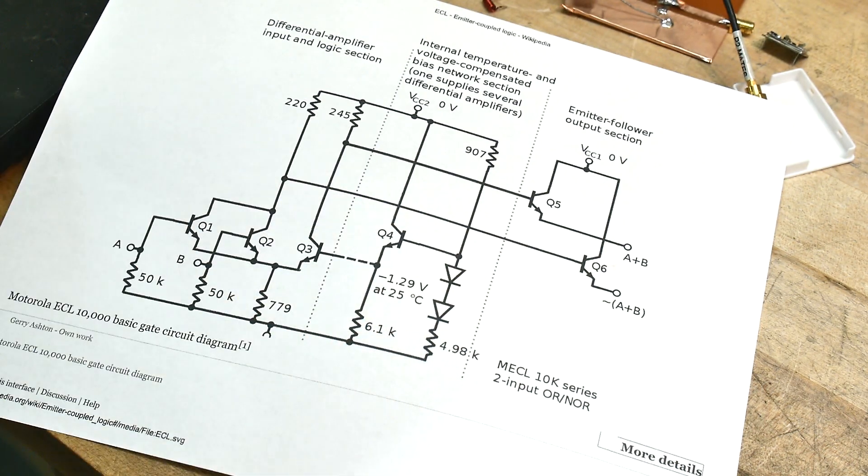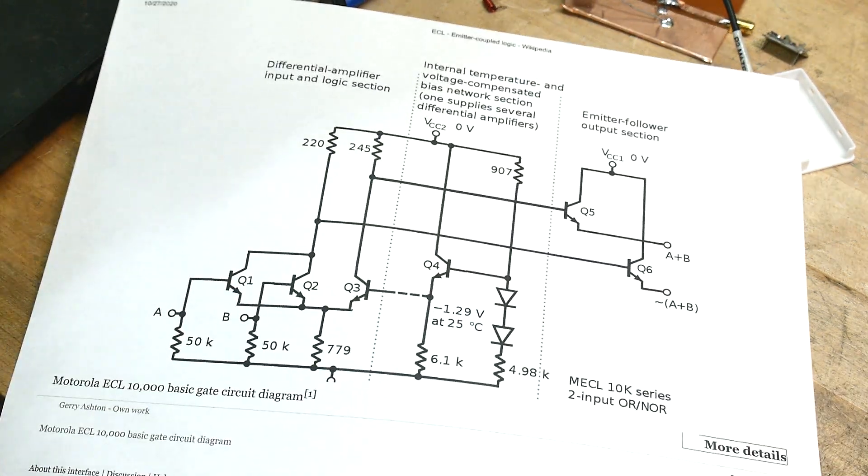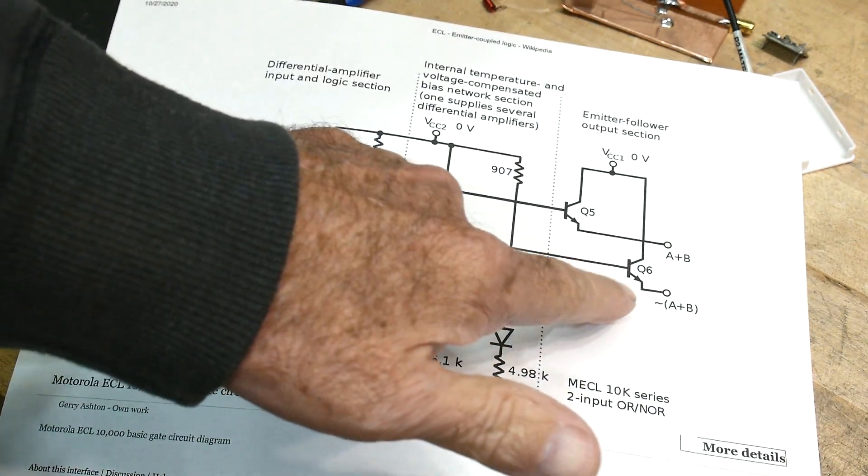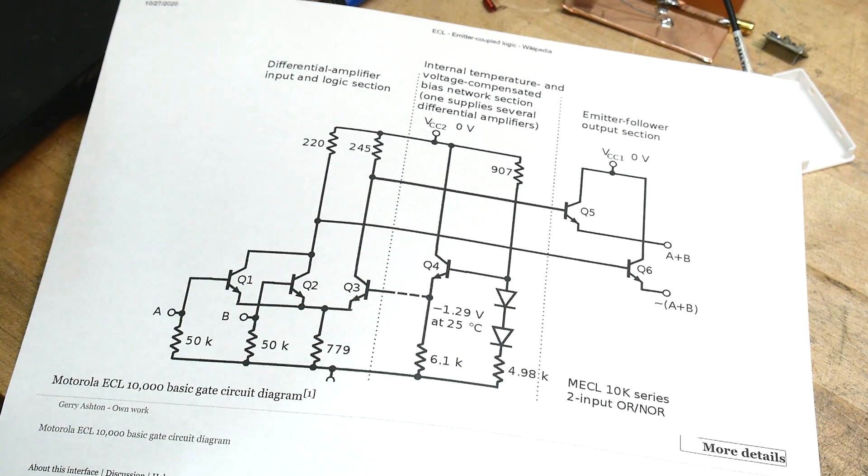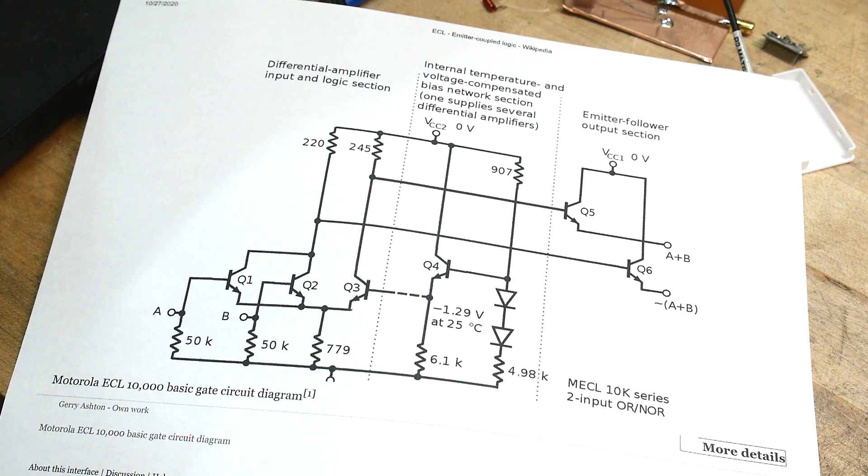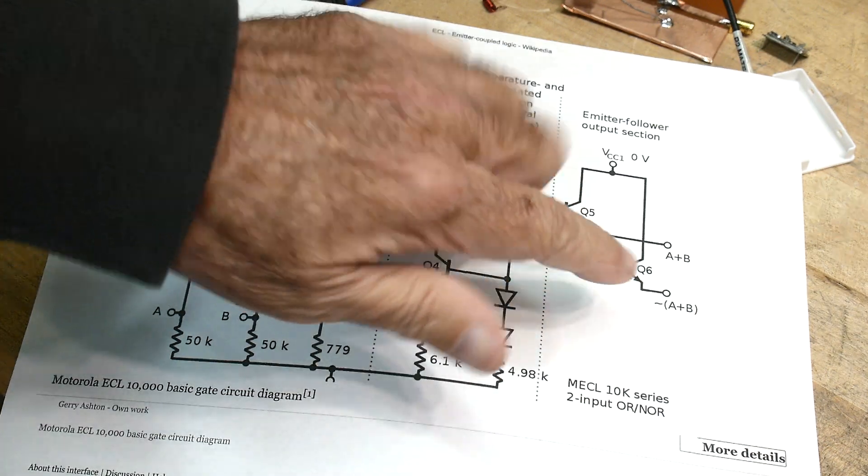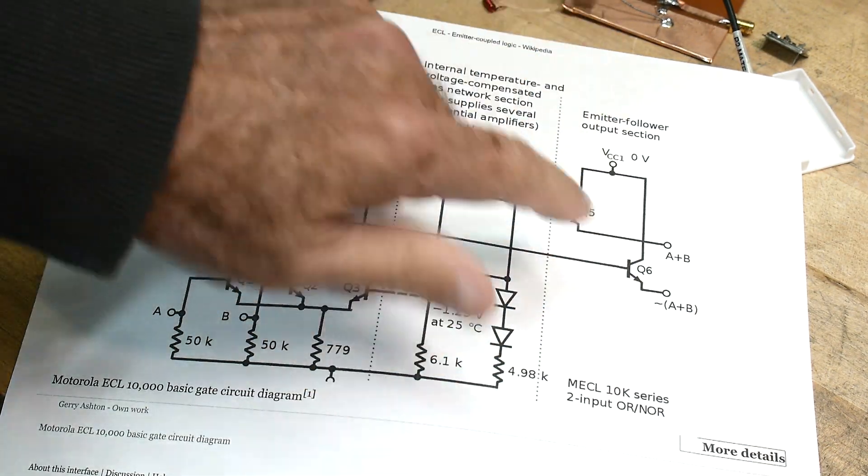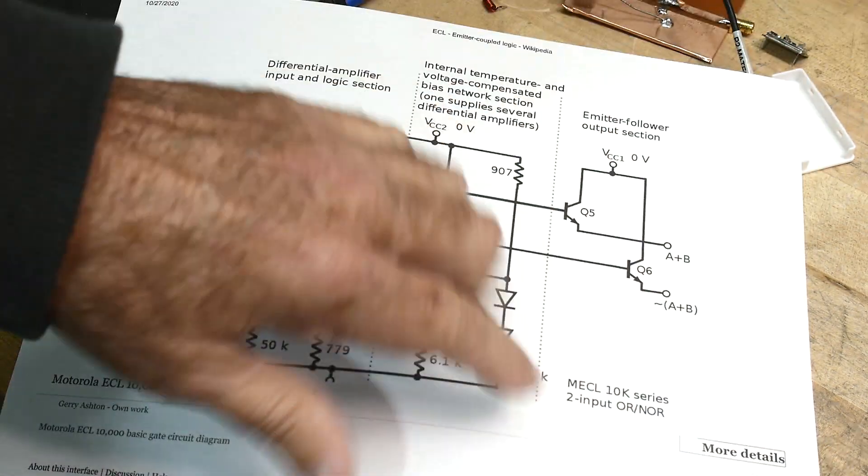He says that ECHL has open emitter outputs. So ECHL stands... I didn't know this because I've never designed an ECHL. ECHL stands for emitter coupled logic. So there's a bunch of emitters. It's like open collector. These are open emitter because they're on the top side instead of the bottom side.